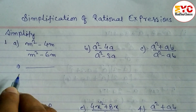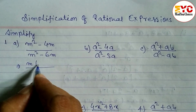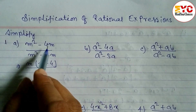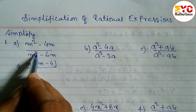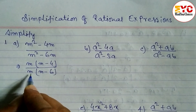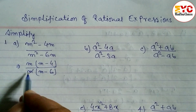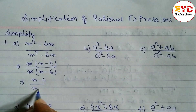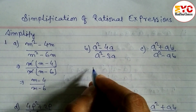In this type of question, first of all we have to take out the common factor. Here we have m squared minus 4m, so we can take m common, leaving m minus 4. Similarly, m squared minus 6m: we take m common, leaving m minus 6, because m times m is m squared and m times 6 is 6m. Then m and m cancel, so what remains is m minus 4 over m minus 6.